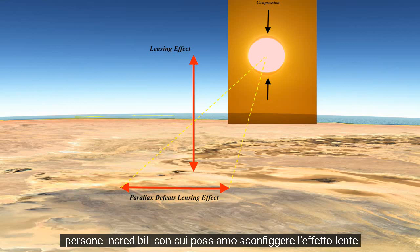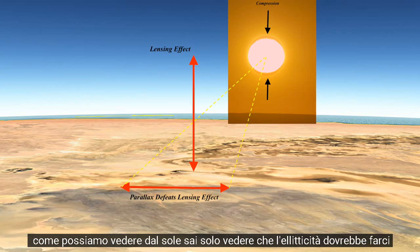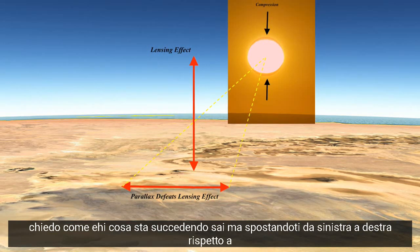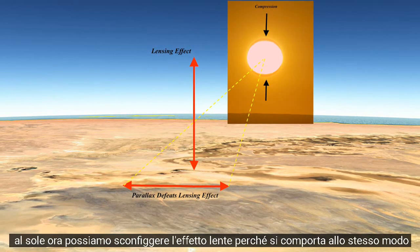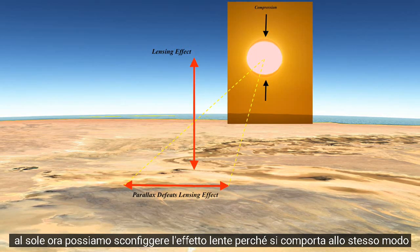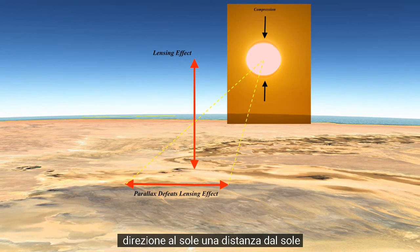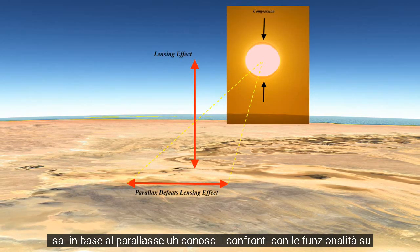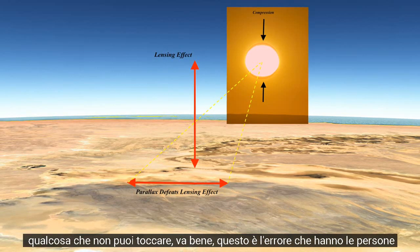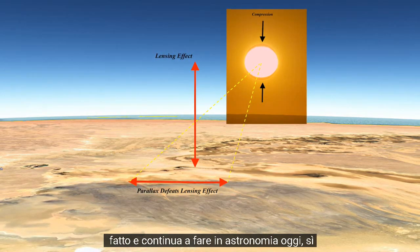We can defeat the lensing effect with parallax. The lensing effect occurs in the vertical dimension — seeing the Sun's ellipticity ought to make us wonder what's going on. But moving left to right, perpendicular to the direction of the Sun, we can defeat the lensing effect because it acts the same at either location. We can get a direction and distance to the Sun based on parallax comparisons to features on the ground — why look at the stars? Why assume something you cannot touch? That's the error people have made and continue to make in astronomy today.